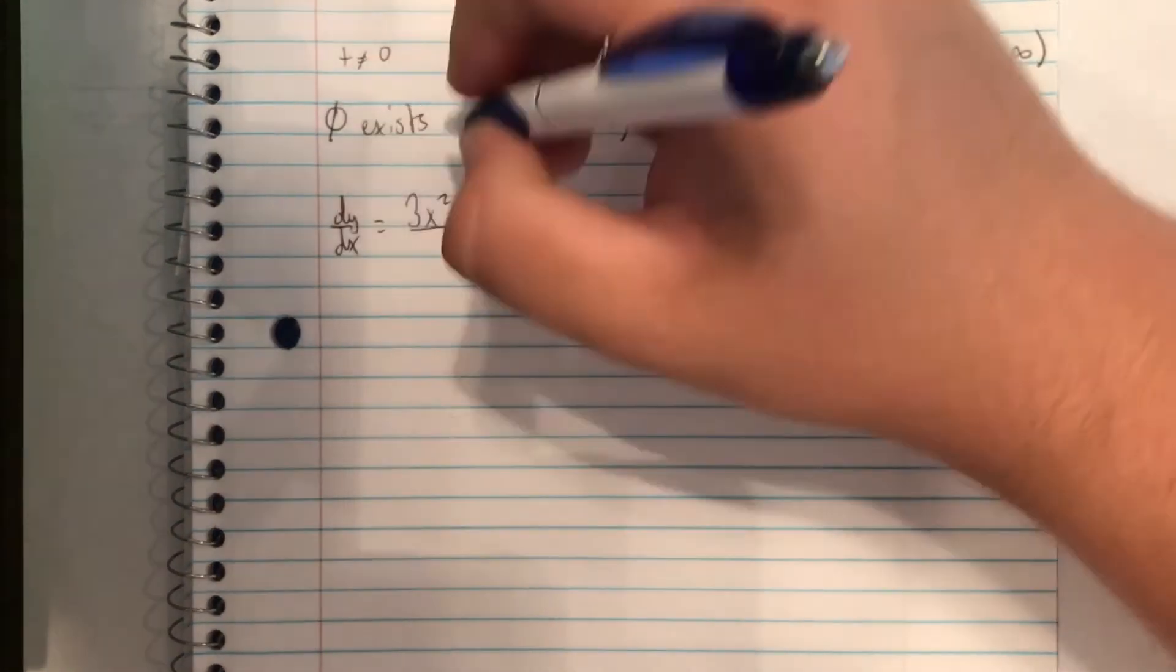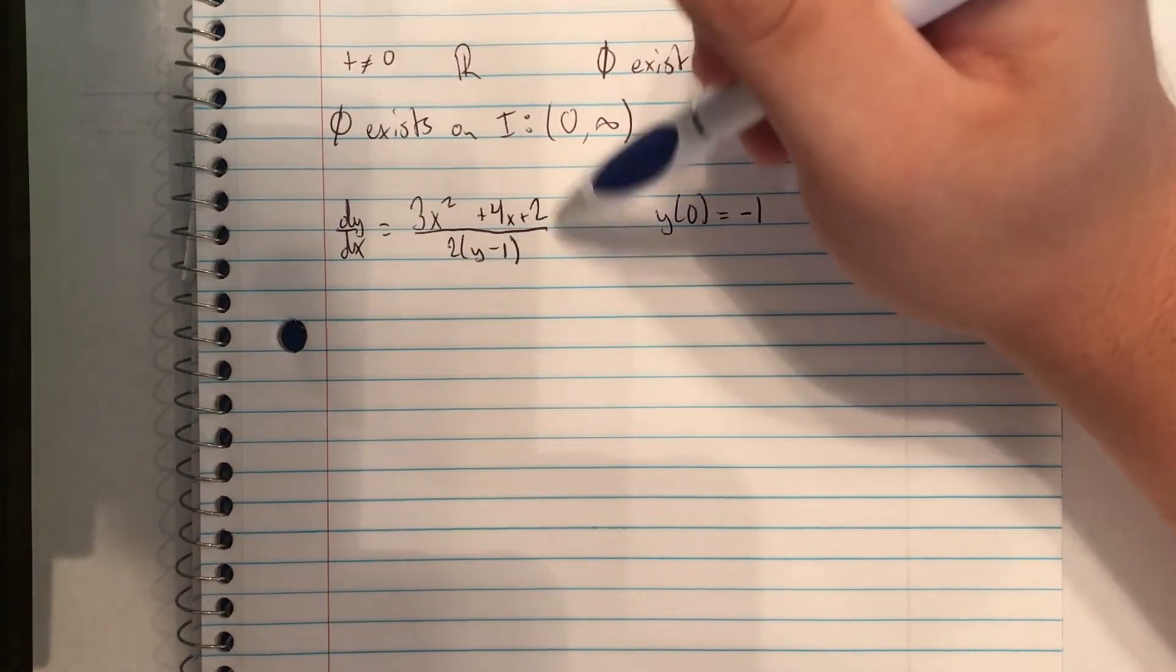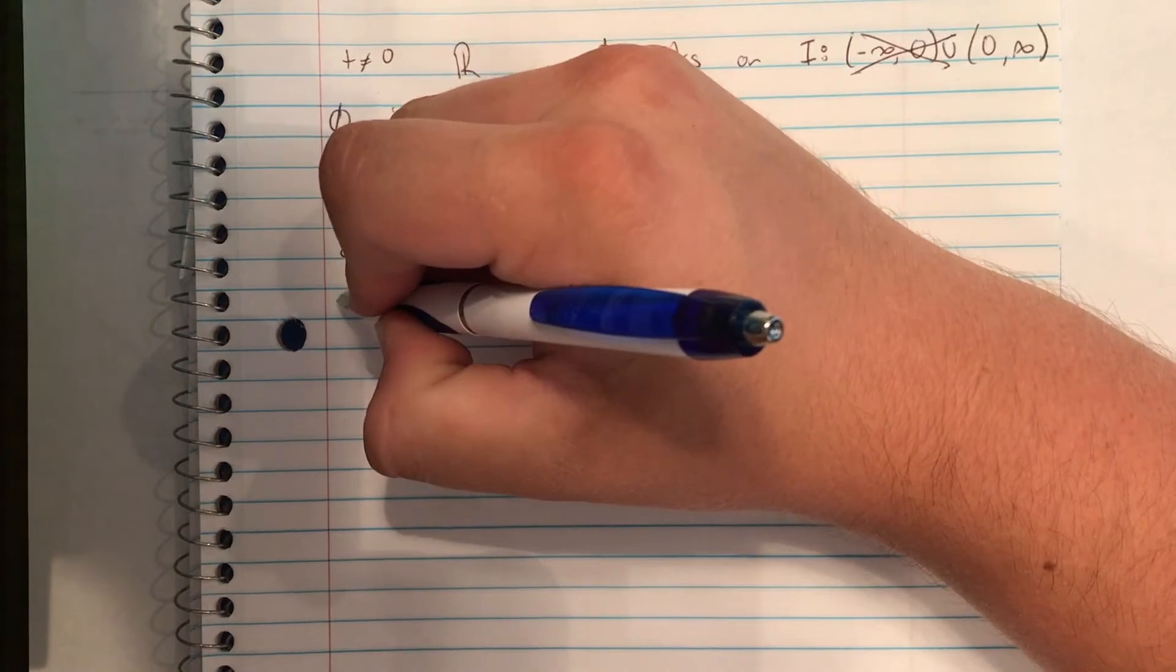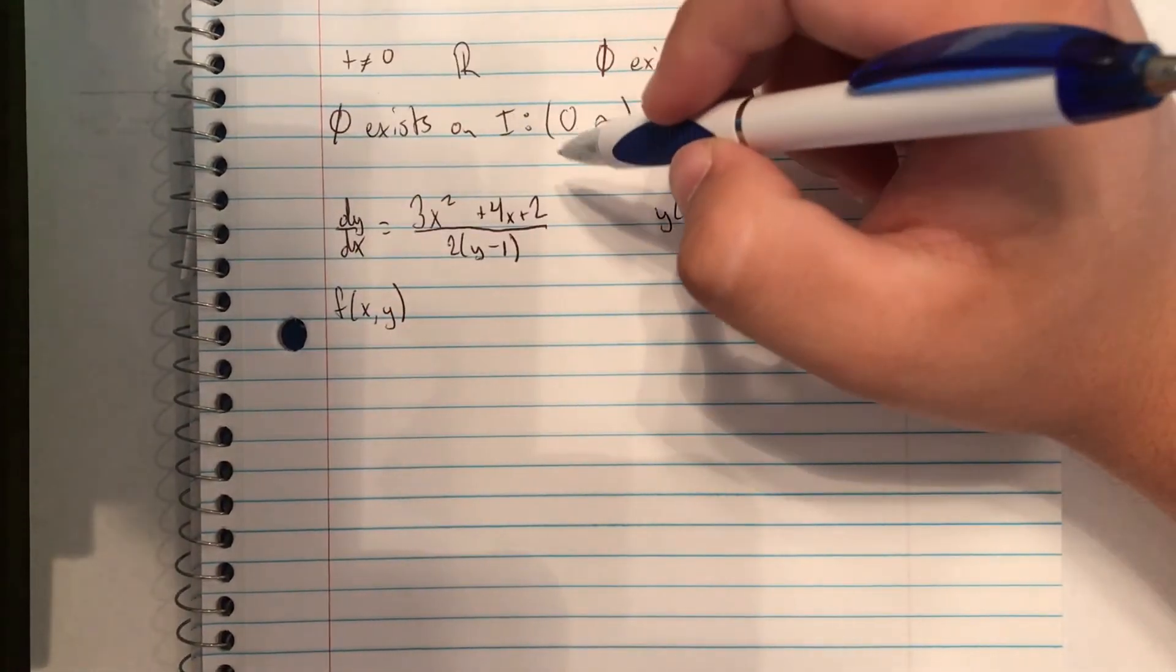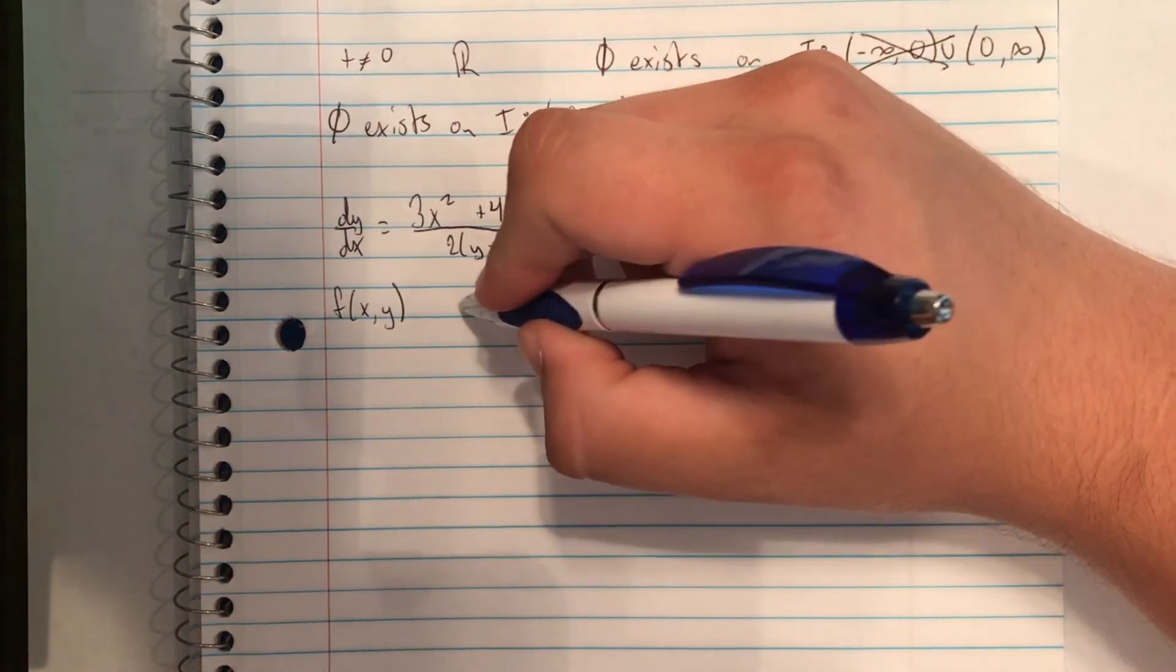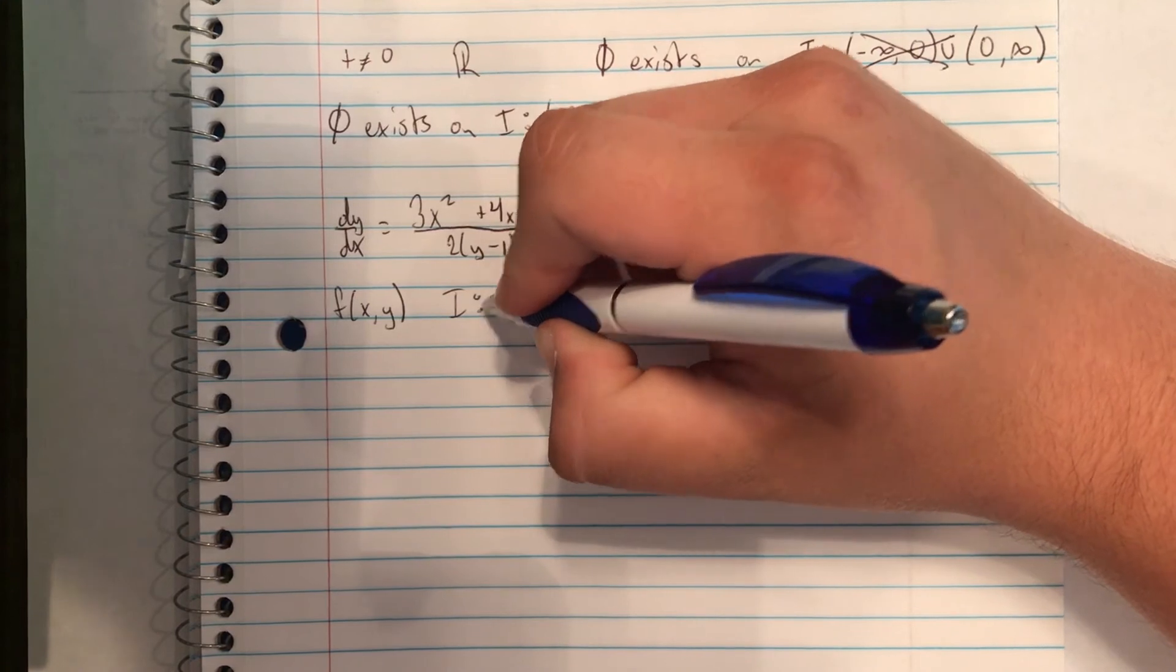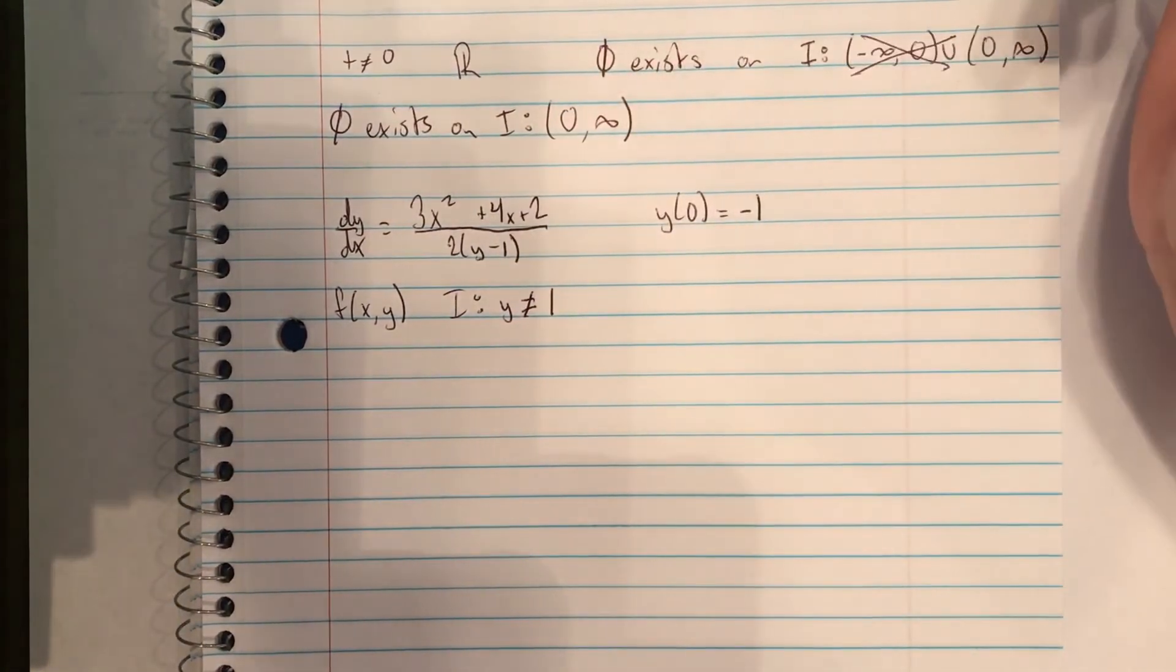And we're going to say... Well, let's first start by finding the interval on this initial one. So we'll just call this f(x, y). And we know it can't have y equal to 1 because we can't have 0 in the denominator.